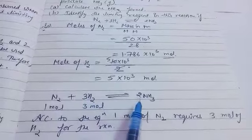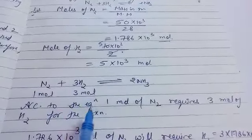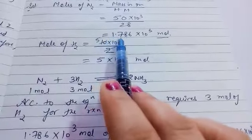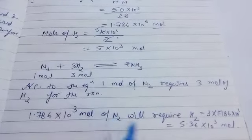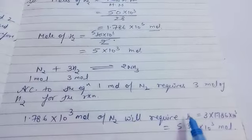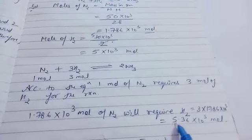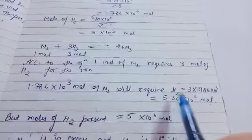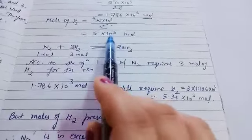From the equation N₂ + 3H₂ → 2NH₃, one mole of nitrogen requires three moles of hydrogen. We have 1.786 × 10³ mol of nitrogen. To find how much hydrogen is needed: multiply by 3, giving 3 × 1.786 × 10³ = 5.36 × 10³ mol of hydrogen required. But our available moles of hydrogen is only 5 × 10³ mol, which is less.